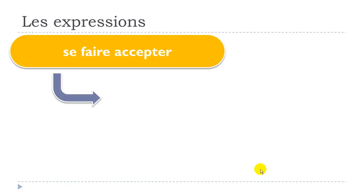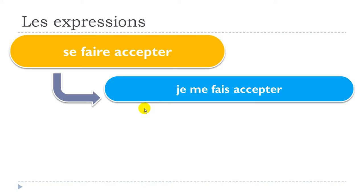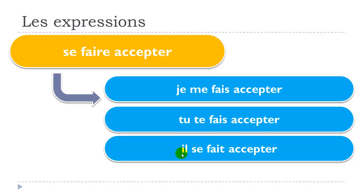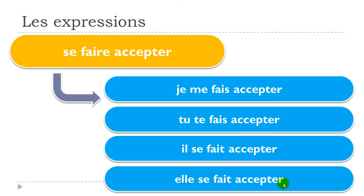Let's see how to conjugate se faire accepter in the present tense. You will have to modify the 'se' when conjugating. For the first person: je me fais accepter. For the second person: tu te fais accepter. For the third person masculine: il se fait accepter. Feminine: elle se fait accepter.